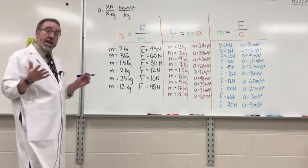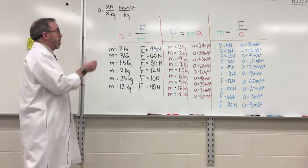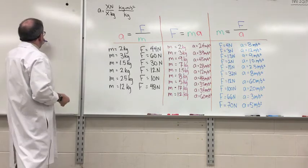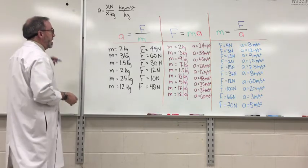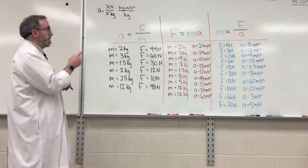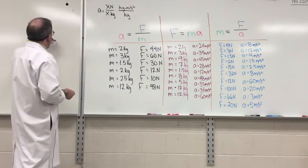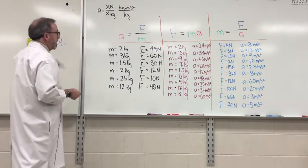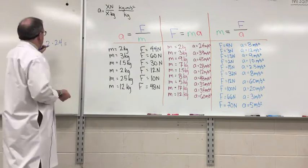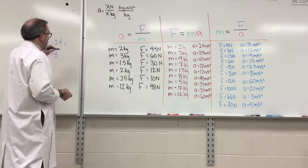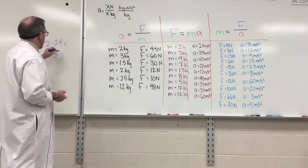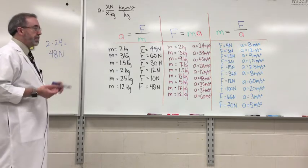The next one. Force equals mass times acceleration. So we're going to take mass, which is 2 kilograms, times the acceleration, which is going to be 24 meters per second squared. And what's 2 times 24? You've got 48. And this is just written in Newtons. That's pretty simple.